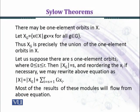There may be one-element orbits in X. Let X_G = {x ∈ X | gx = x for all g ∈ G}. Thus X_G is precisely the union of the one-element orbits in X.